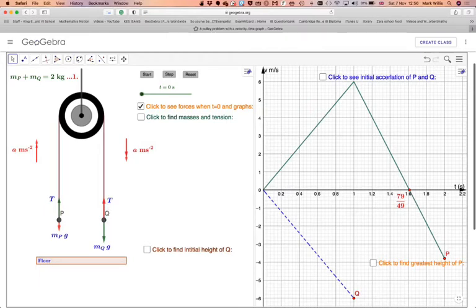The initial acceleration of P and Q we just get it from here, this one will be 6 divided by 1. This is just going in the opposite direction.